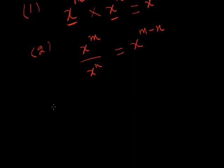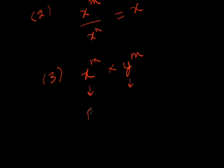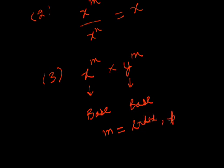Moving on to the third law, we will understand each law separately but first write all the laws. The third law is when the base is different but the power is the same. In the first law the base was same but powers were different. In the third law the base is different but powers are same. Here x and y are the bases, and m is the index or power. x to the power m multiplied by y to the power m gives x times y, whole raised to the power m.